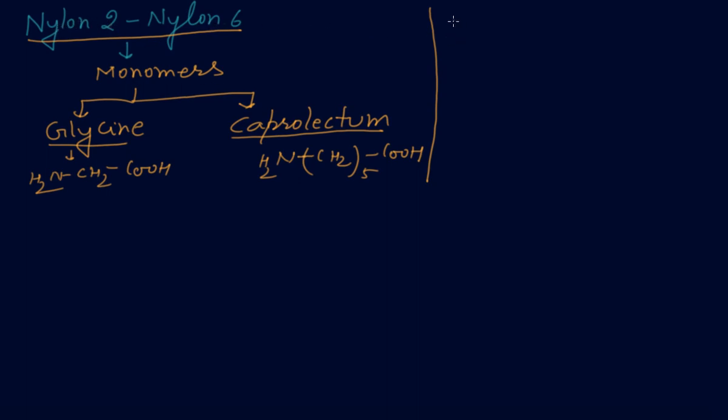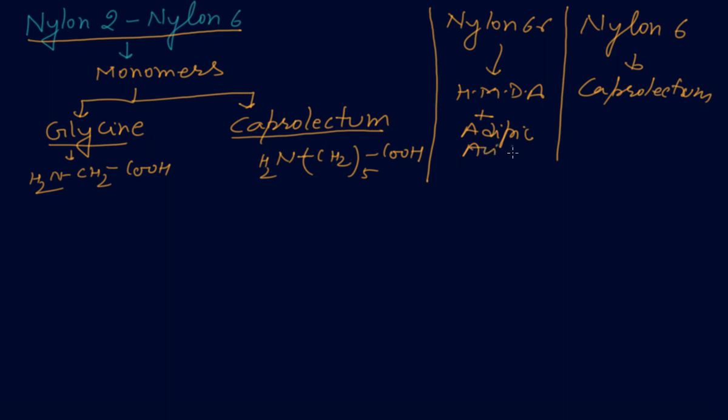One question is coming - whenever you are learning these polymers, you learn in this way. Suppose we have to learn the monomers of Nylon 2-6, at the same time you must learn the monomers of Nylon 6-6 and Nylon 6. So it will be easy. Nylon 6 monomer is caprolactam, and Nylon 6-6 monomers are hexamethylene diamine and adipic acid. I told you number of times adipic acid. You learn these three in this way, it is easy to make command. Whereas Nylon 2-6, that part is biodegradable. Then you learn Buna-N, Buna-S in this way.